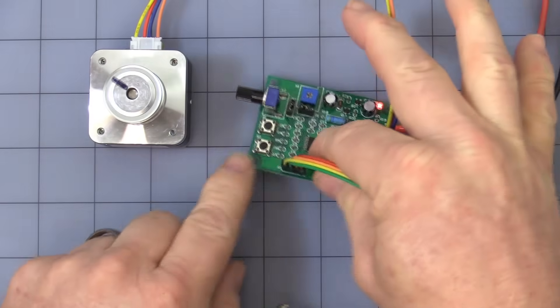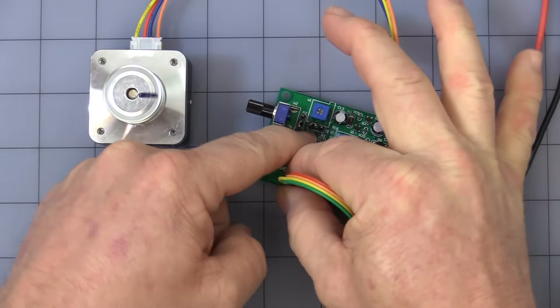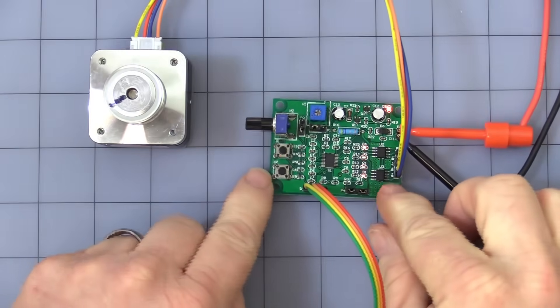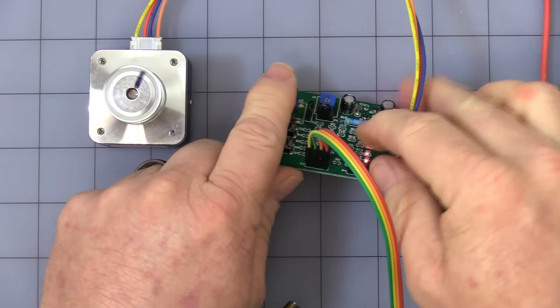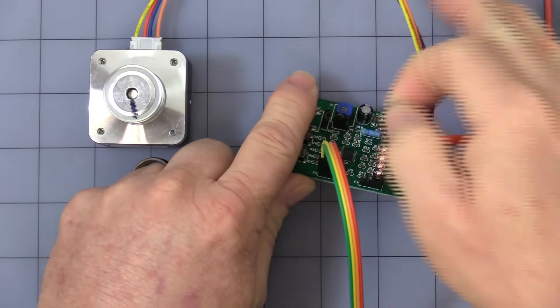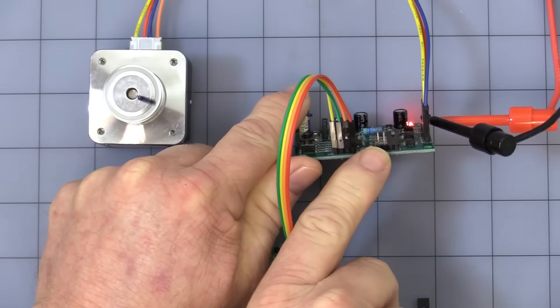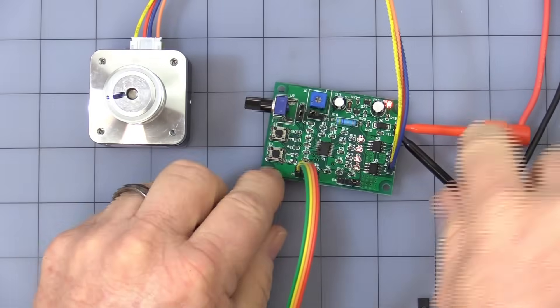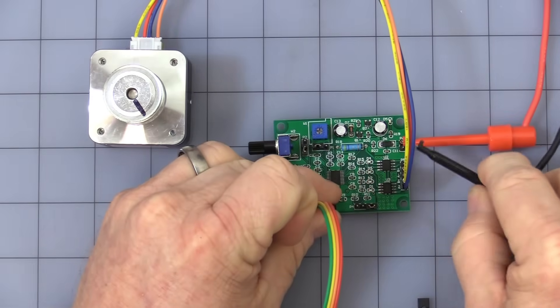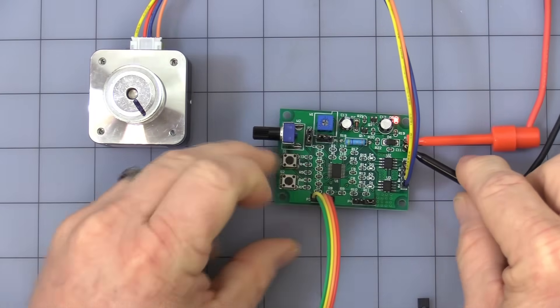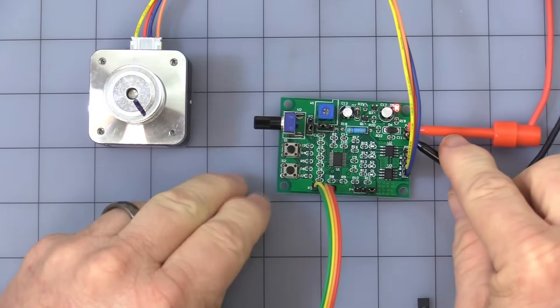Alright, that was program one. Let's start with program two. Go ahead and leave my limit switches up. And in program two, remove the left jumper. Hopefully, you can see that there. And every time you change it, you have to remove power and add power back. Now we're in program two.